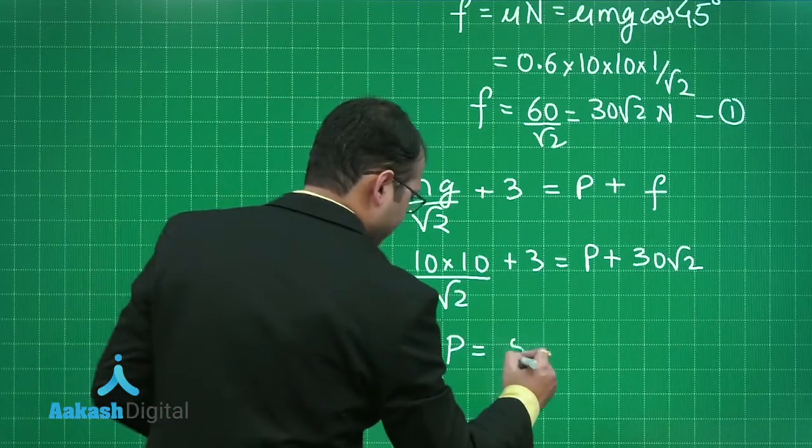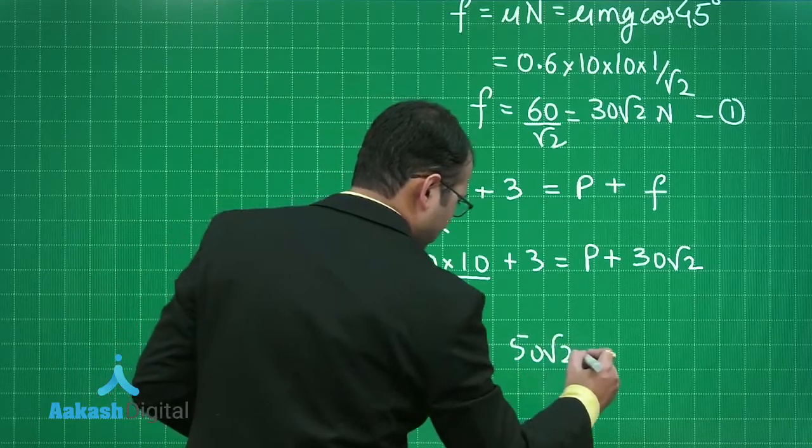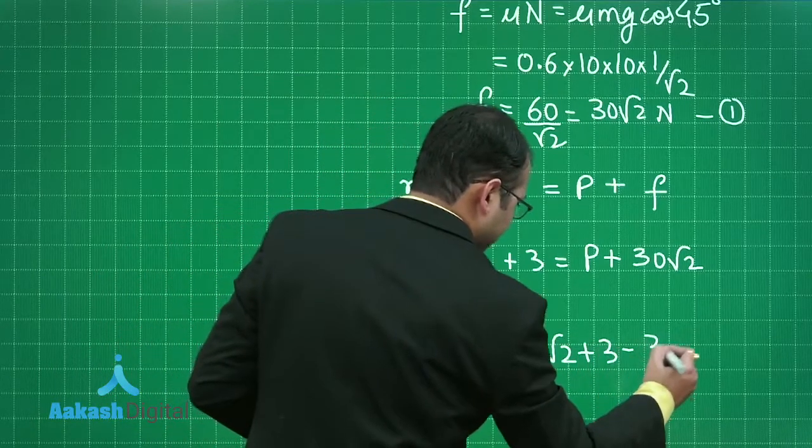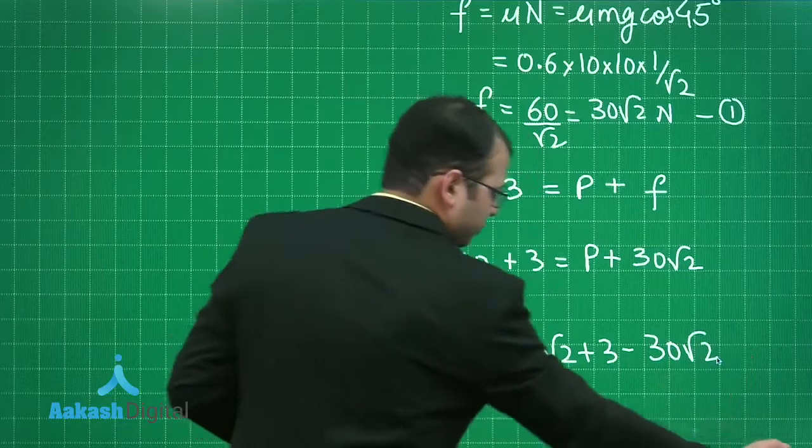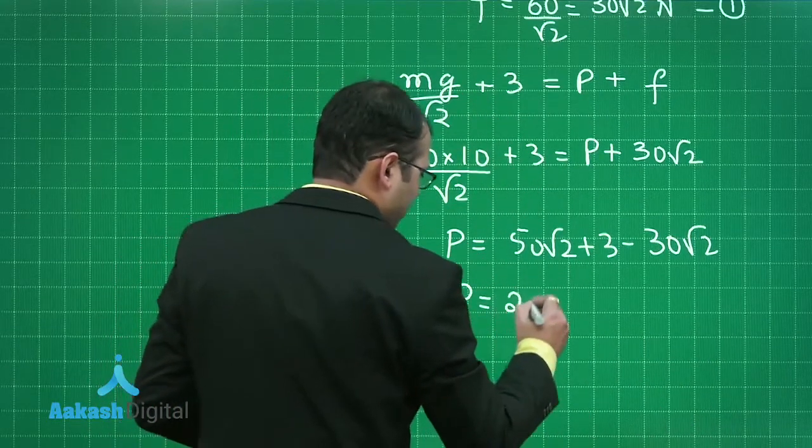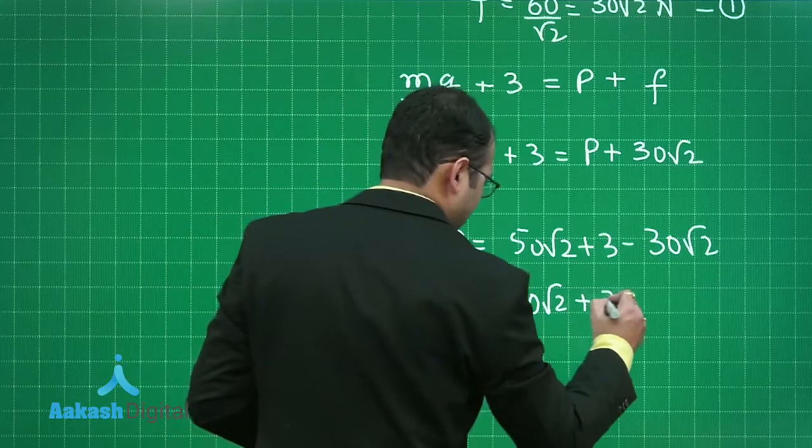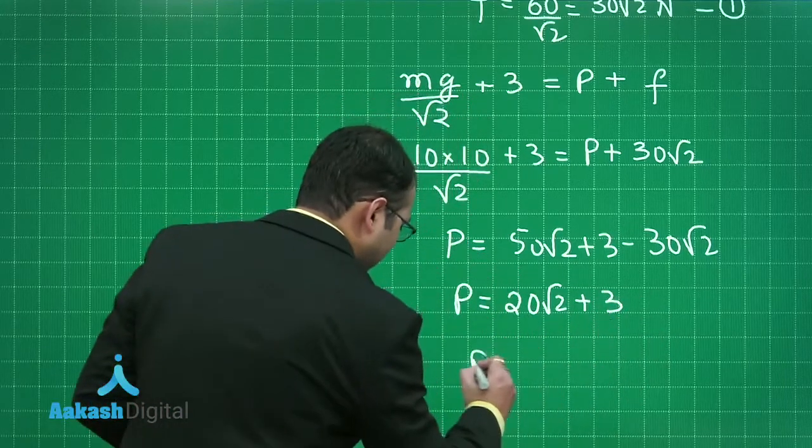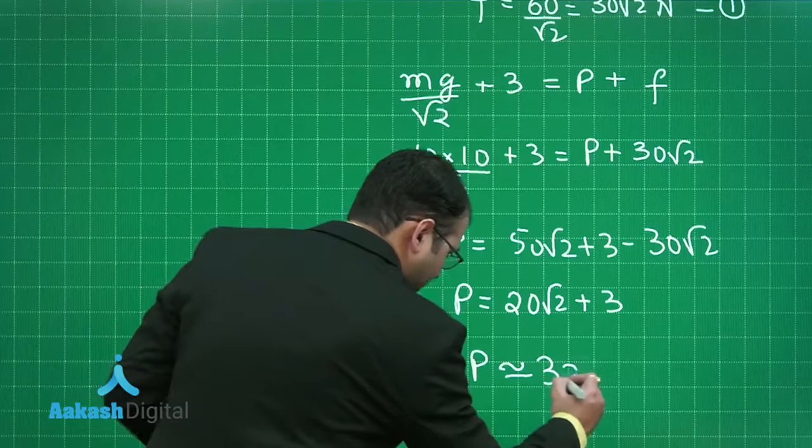P would be 50 root 2 plus 3 minus 30 root 2. Solving this you will get 20 root 2 plus 3 Newton, which would be nearly equal to 32 Newton.